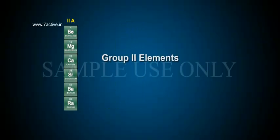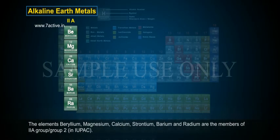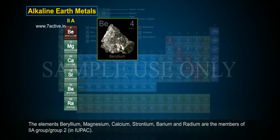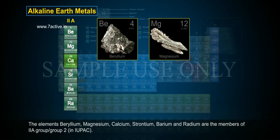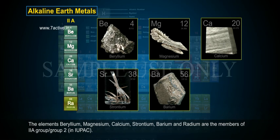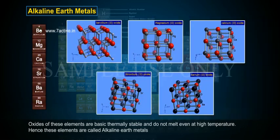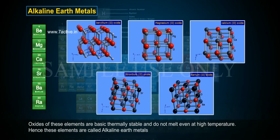The elements beryllium, magnesium, calcium, strontium, barium, and radium are the members of Group 2A, or Group 2 in IUPAC. The oxides of these elements are basic, thermally stable, and do not melt even at high temperatures.